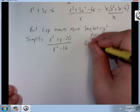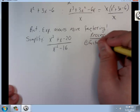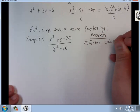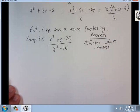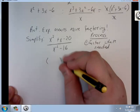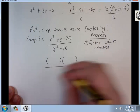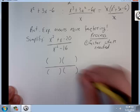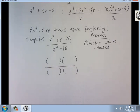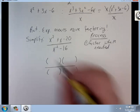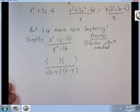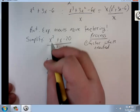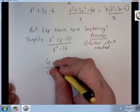First factor where needed. In this case I need to factor both top and bottom. Bottom's easy, difference of two perfect squares, I've got x plus 4, x minus 4. The top it's going to be x plus 5, x minus 4.